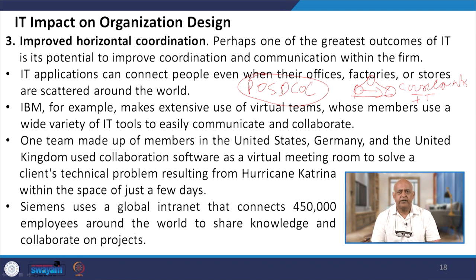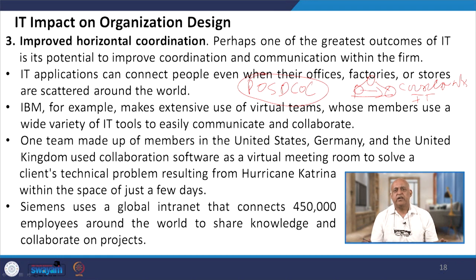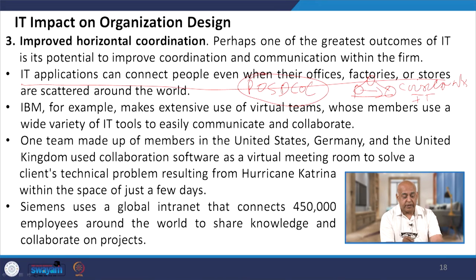A simple example is that in horizontal coordination, a meeting is required. Nowadays online meetings allow a person who is not physically present on the premises to still participate and make this coordination with the help of technology. Here the role of technology, especially IT, becomes very important because this application can connect people even when their offices, factories, or stores are scattered around the world. IT's most important function is as a coordination mechanism.